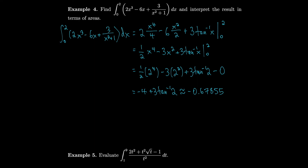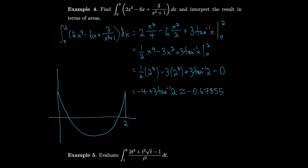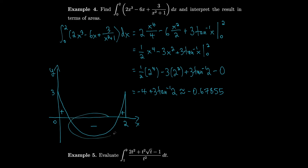To interpret this in terms of areas, let's look at a graph from zero to two. The function crosses the x-axis, so integrating over part of the interval gives a positive area, integrating over another part gives a negative value — it's a signed area. There's also a positive area at the end. The negative area dominates, which is why our answer is negative — it's the sum of these areas where we subtract the negative region.